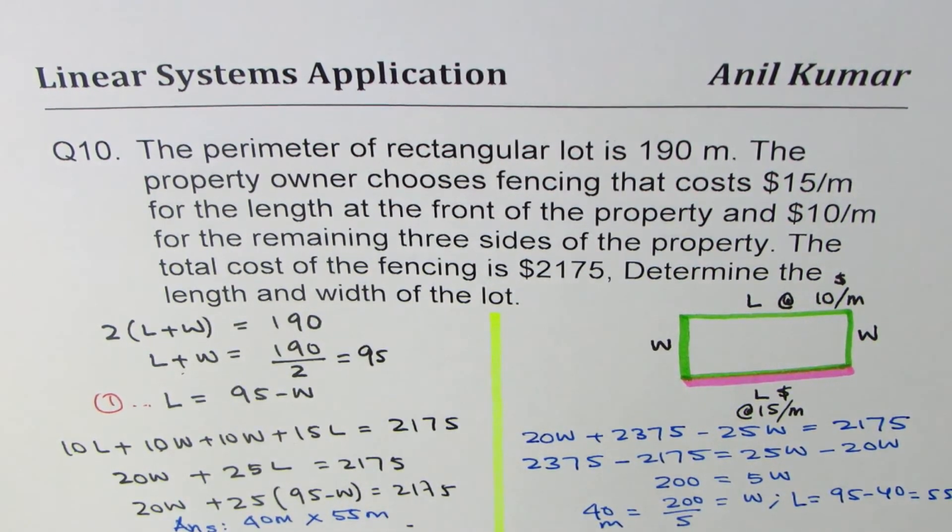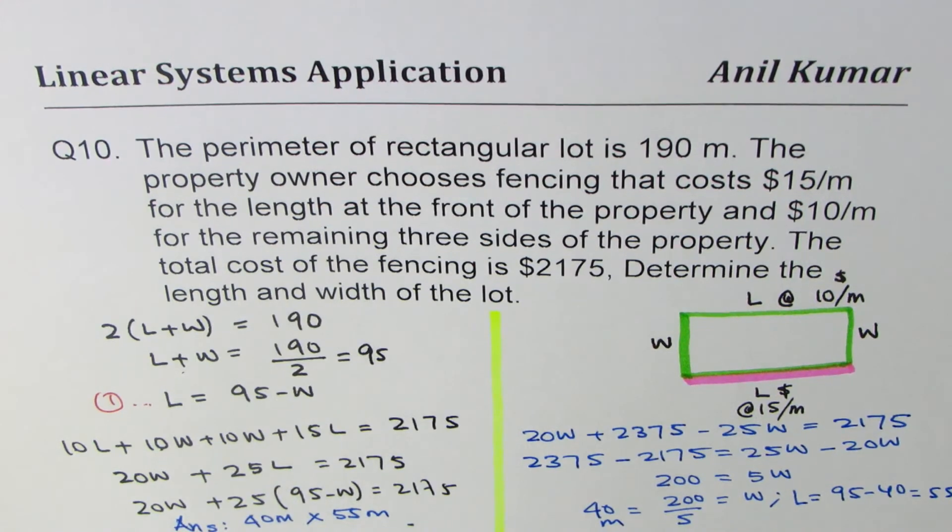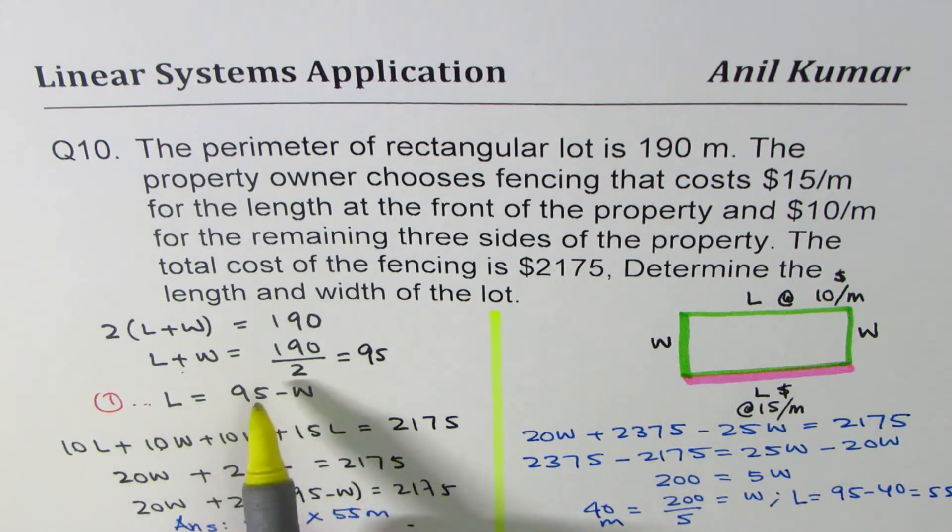So that is how you would actually solve such a question. So here we are given cost and the perimeter. And I hope you understand how we use that variable cost to find the equation, and then isolated one of the variables,